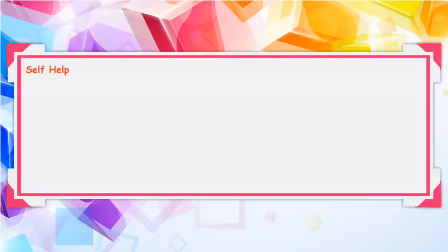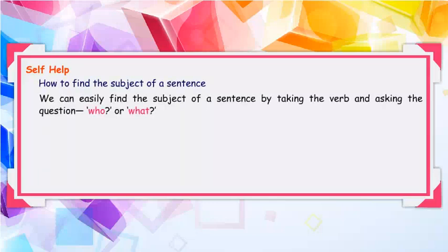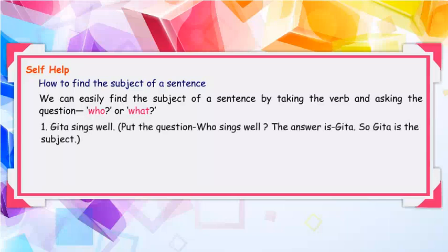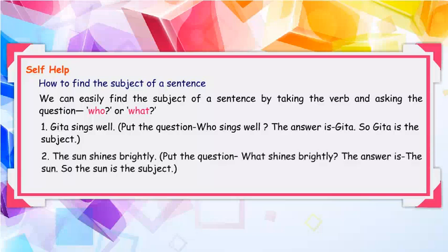Self-help: How to find the subject of a sentence? We can easily find the subject of a sentence by taking the verb and asking the question 'Who?' or 'What?' For example, 'Gita sings well.' Ask: who sings well? The answer is Gita. So, Gita is the subject.